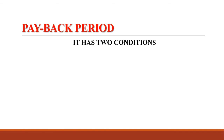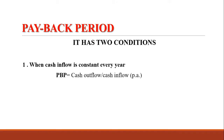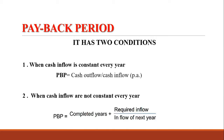Now the payback period method has two conditions. Number 1: when cash inflow is constant every year, then payback period is equal to cash outflow divided by cash inflow per annum. And second: when cash inflows are not constant every year, then payback period is equal to completed years plus required inflow divided by inflow of the next year.